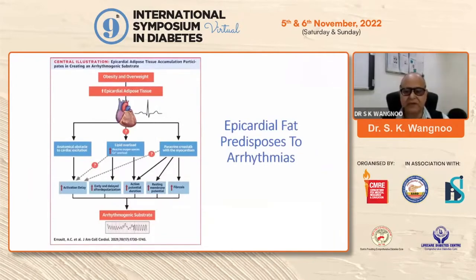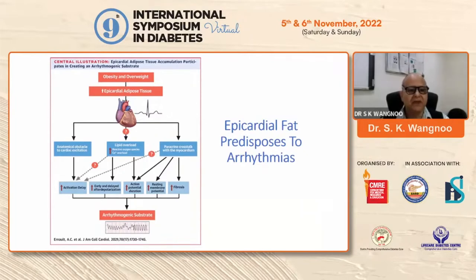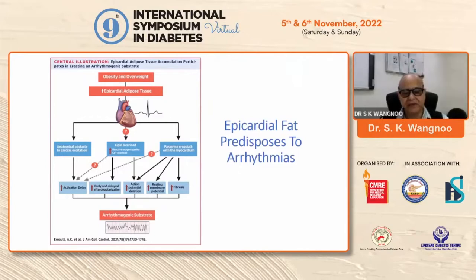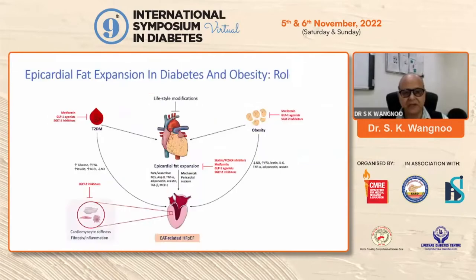We also talked about atrial fibrillation. Epicardial adipose tissue accumulation participates in creating an arrhythmogenic substrate because of the anatomical obstacle to cardiac excitation, because of lipid overload, and because of paracrine crosstalk with the myocardium. This leads to increased activation delay, early and delayed after-depolarization, increase in action potential duration, increase in resting membrane potential, and increase in fibrosis — which together provide the ground for an arrhythmogenic substrate relating to atrial fibrillation.